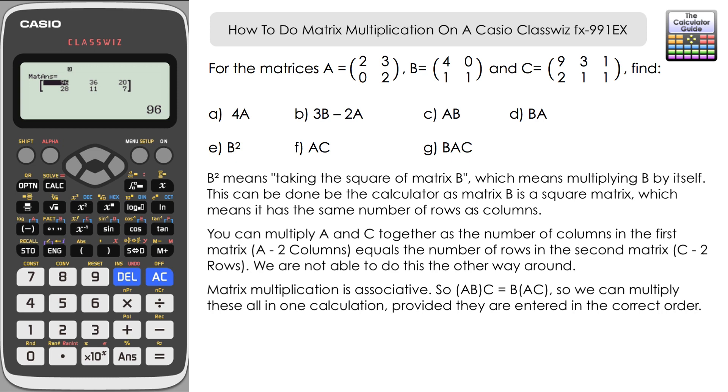So pretty straightforward to do various different types of multiplication. It's a lot of pressing option and then recalling, well, three, two, six. We didn't have a matrix D in this example, but we may have done. So there's four matrices that you can use at any one time.